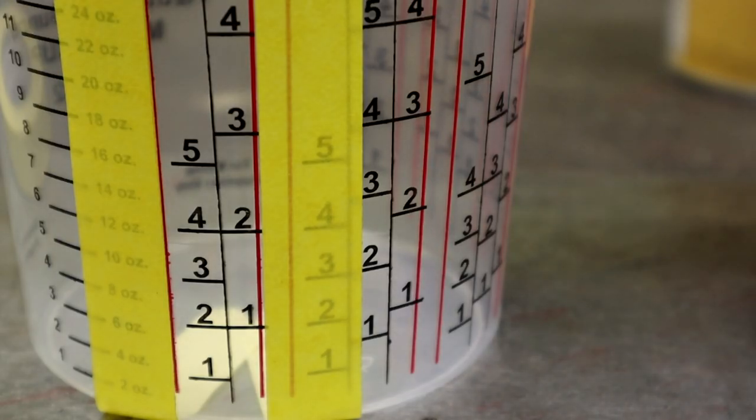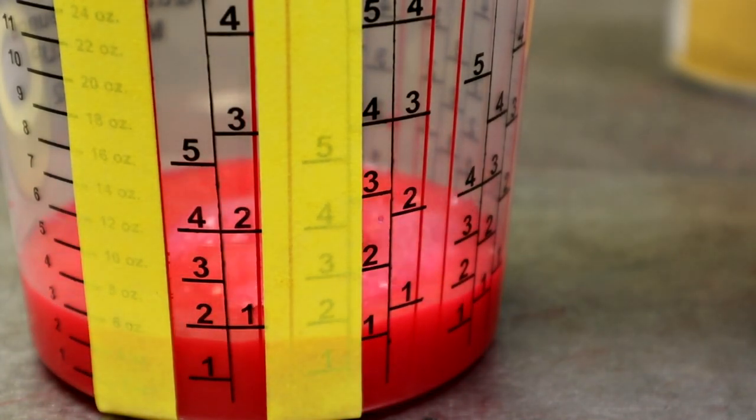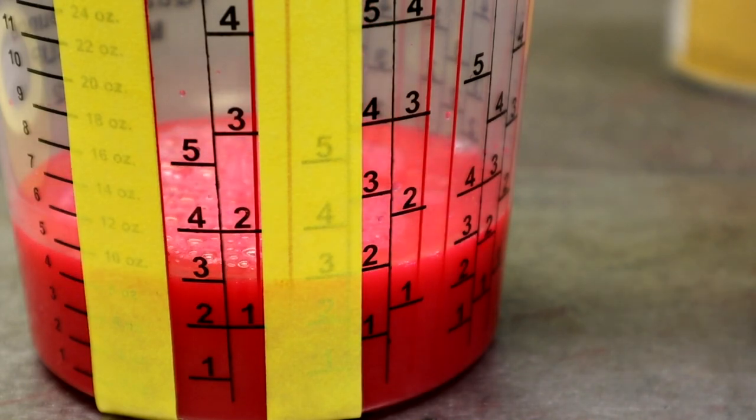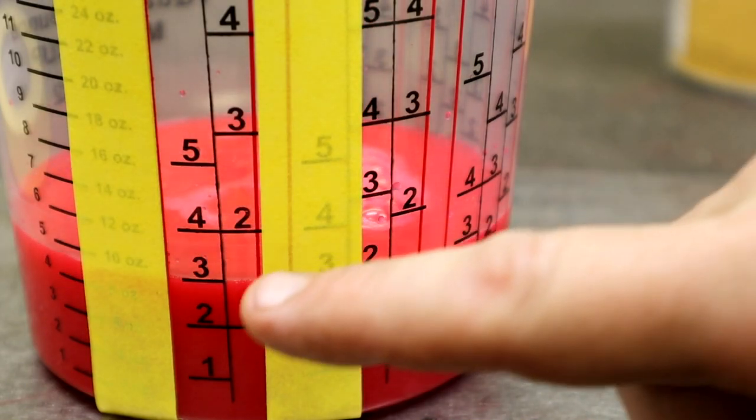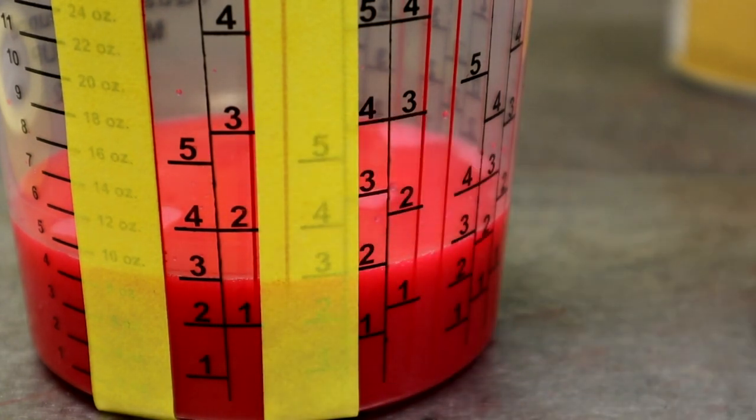So you'll take your base coat and you'll pour it up to your three. Now you need to make sure a lot of people will guess at doing this stuff. This is a chemical reaction. So as you can see, we got to the three. You want to get these numbers, you like being a chemist. So you want to do it exactly as it says. So now we're going to be adding our reducer. So we're going to go up to our next three.